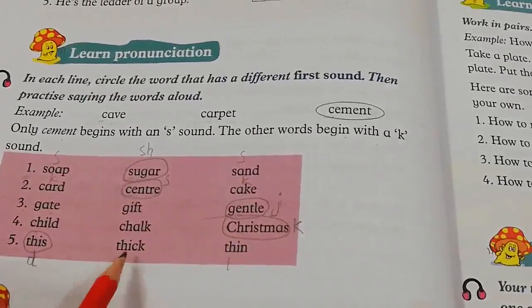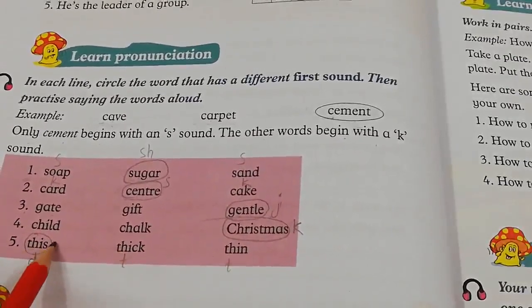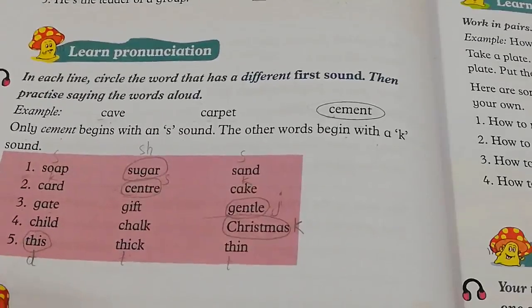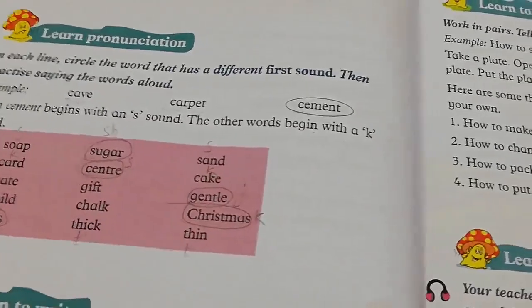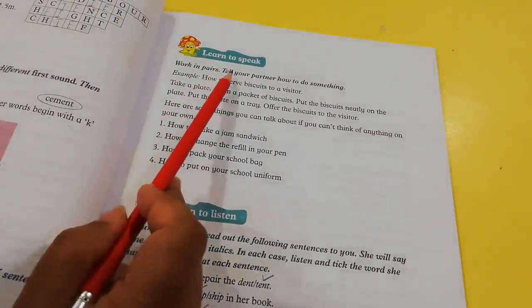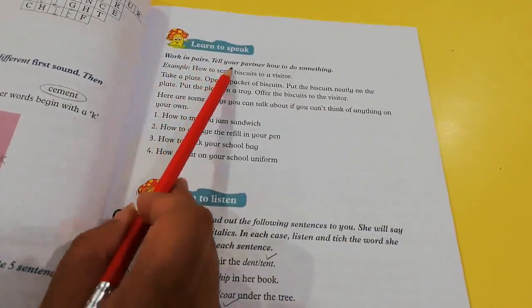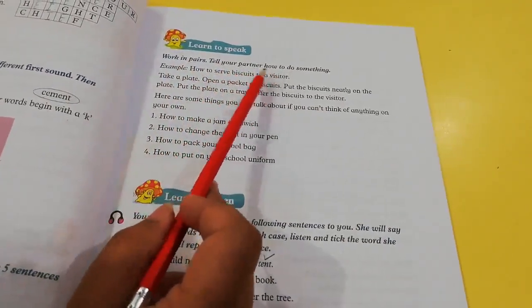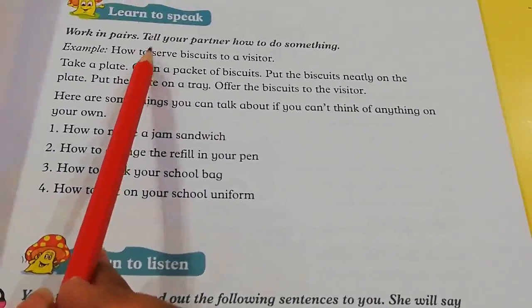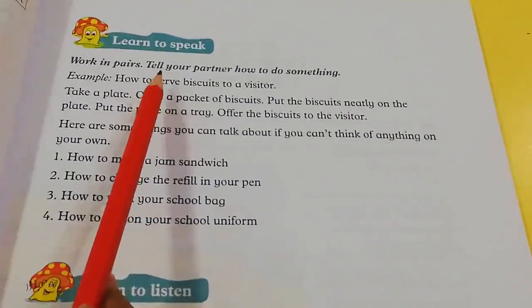The last one: This, Thick, Thin. The word 'This' starts with a D pronunciation, while Thick and Thin start with a TH sound. So we will circle This. Now moving on towards our next page. Learn to speak — work in pairs. Tell your partner how to do something. This is a question we will do in class, but you can also do it with the help of your parents or brothers and sisters.